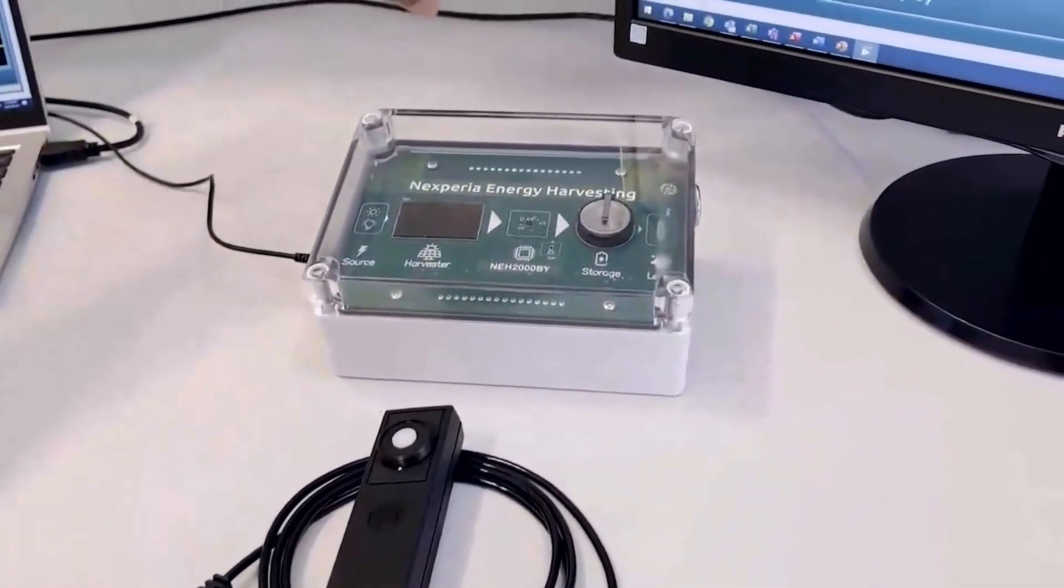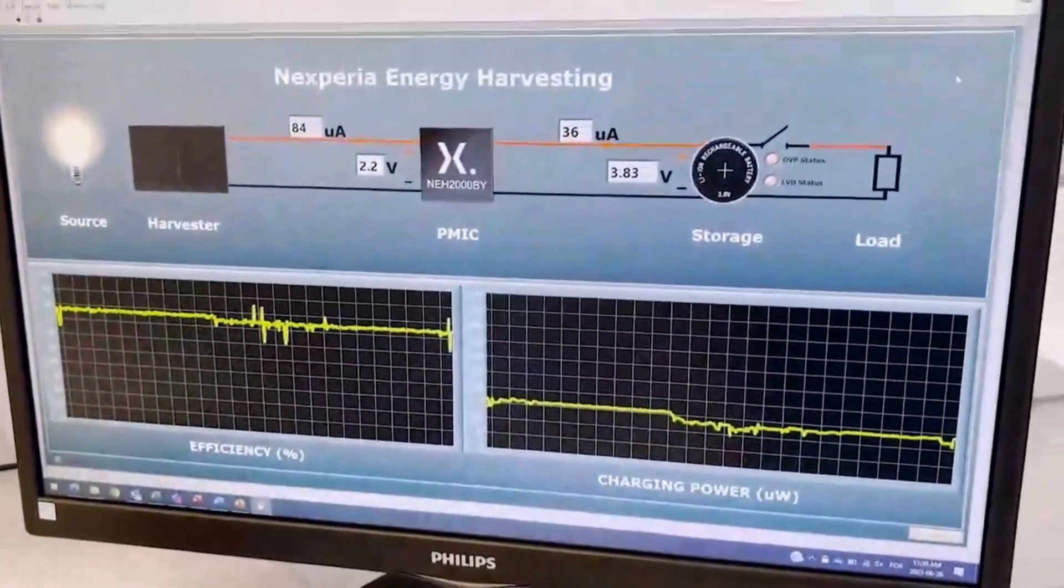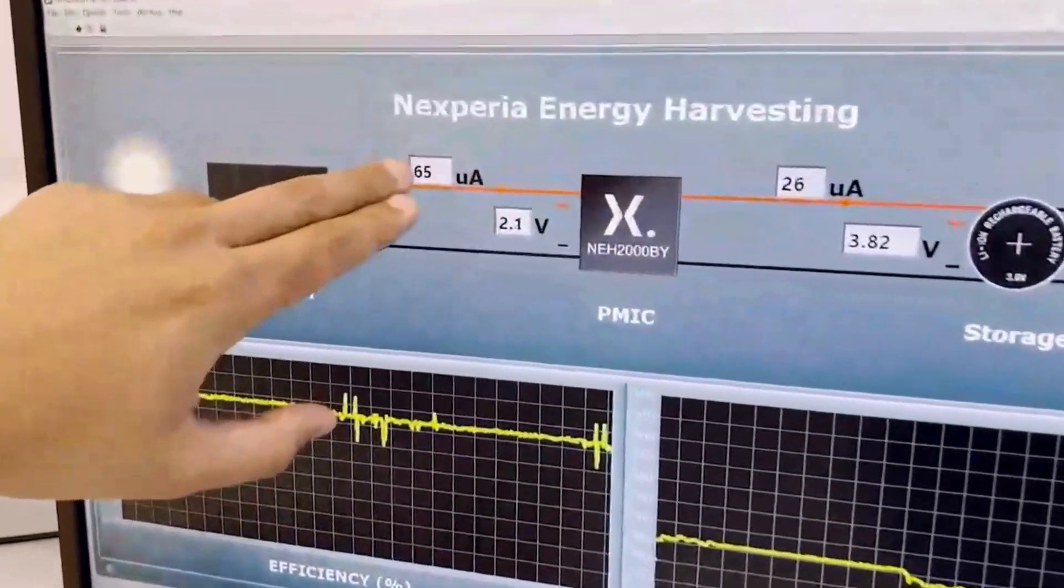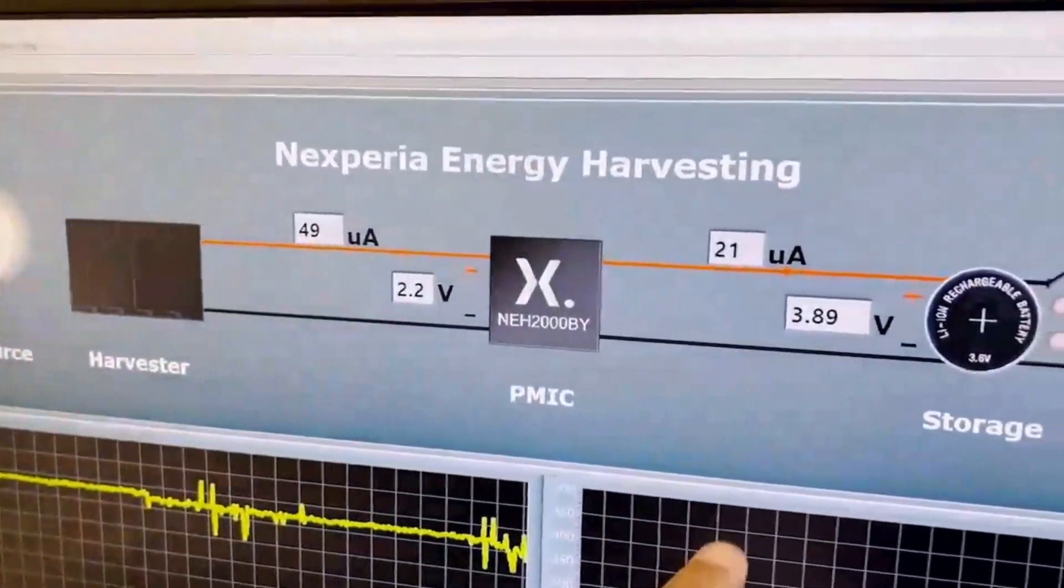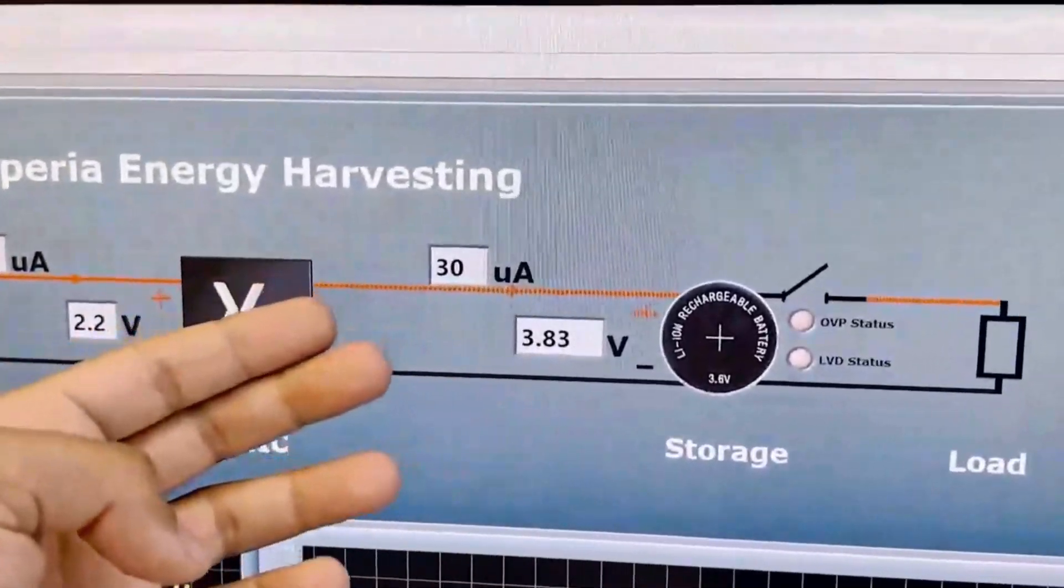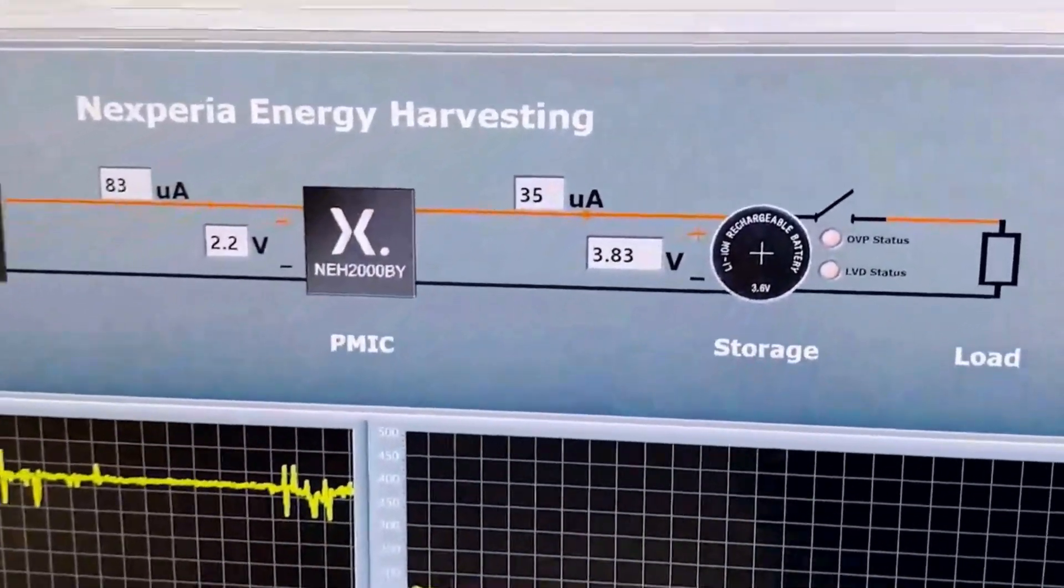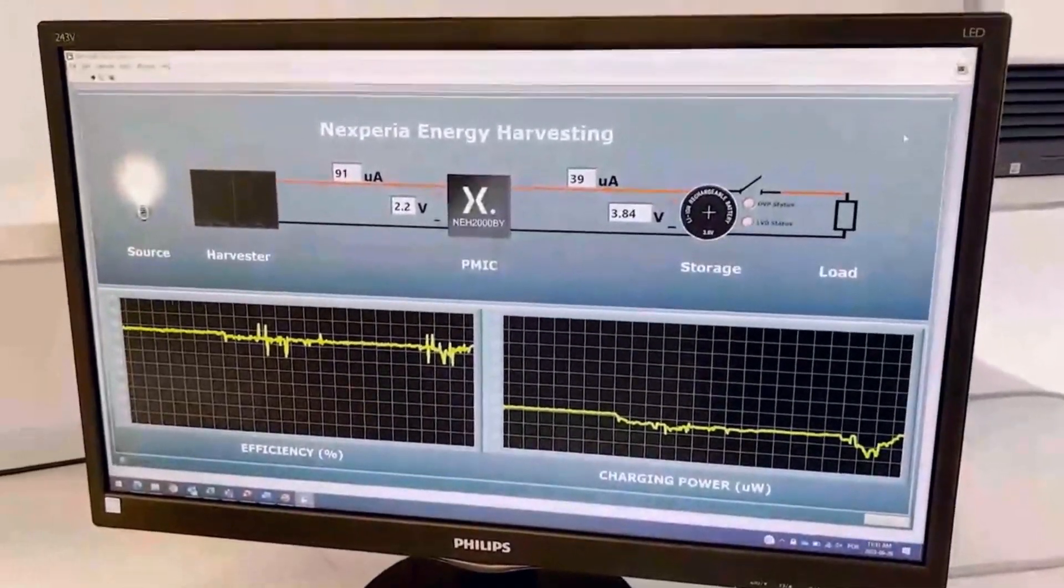In this big screen here I have the user interface. As I said we have the current and voltage for the input side, the current and the voltage for the output side. So we can fully characterize the energy harvesting.